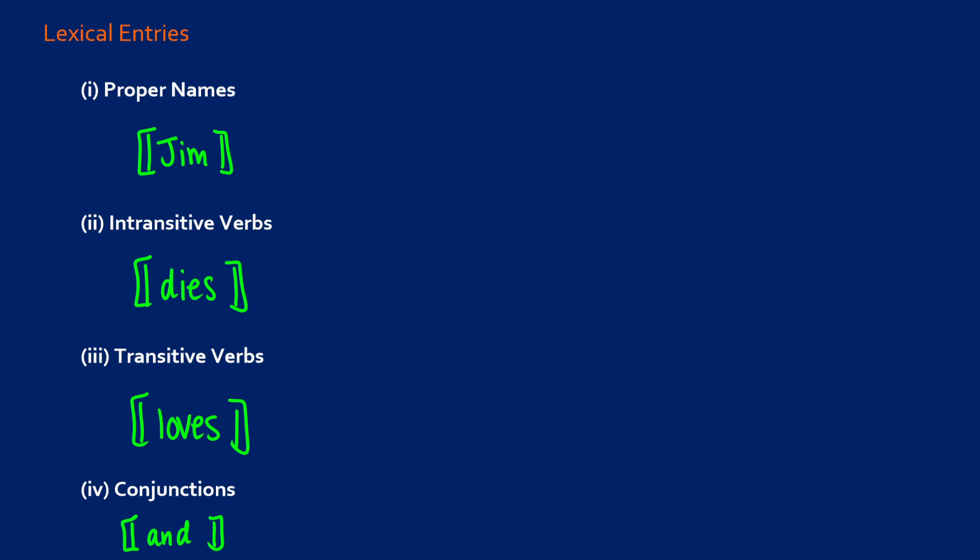So here's what our lexical entries are going to look like. When it comes to proper names we're just going to use the actual name of the person, and this is not quote unquote a word. What this is is a representation of the person. So when we write Jim here we're really trying to specify the object in the real world with some sort of label.